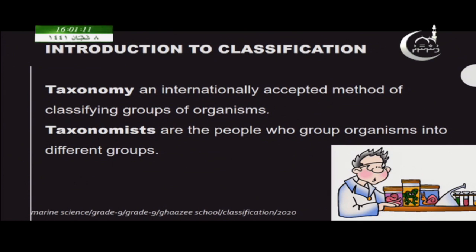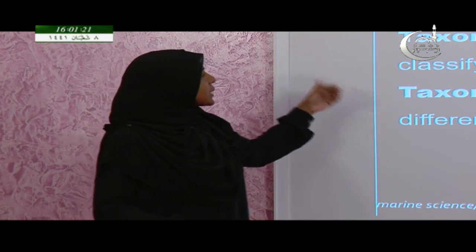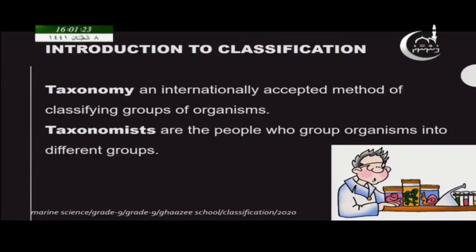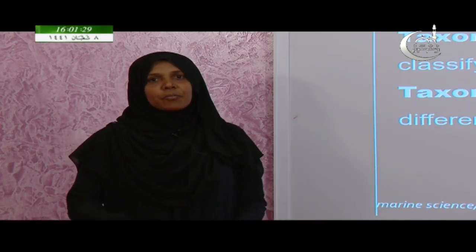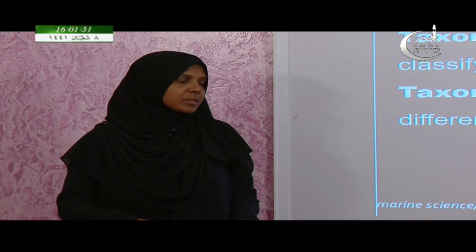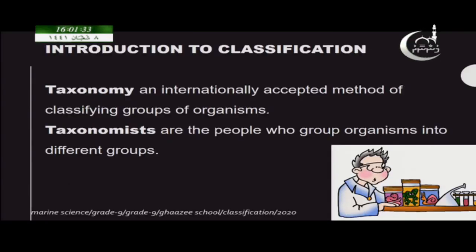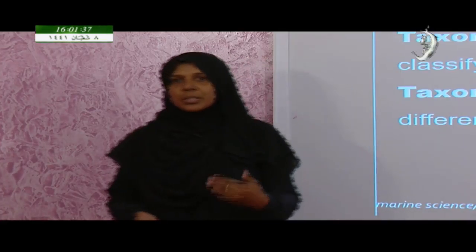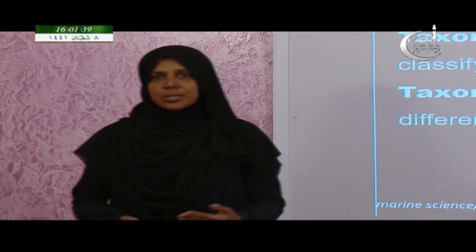Now we will move on to the introduction. First we will look at two main terms. The first term is taxonomy. Taxonomy is an internationally accepted method of grouping organisms into different taxa or different phylums. The people who do this work are called taxonomists.